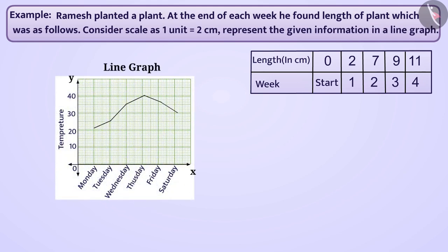A line graph represents data that changes continuously over time. Data is displayed by dots in the line graph. Now, let us draw a graph based on the information shown.